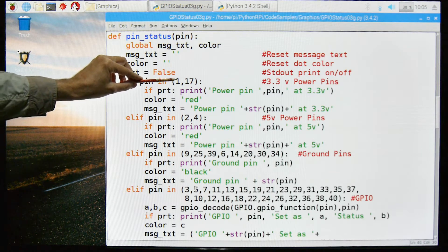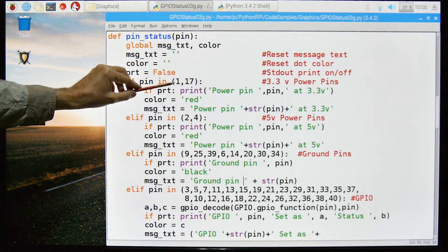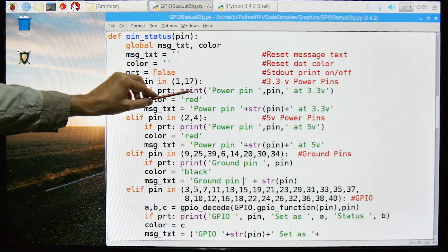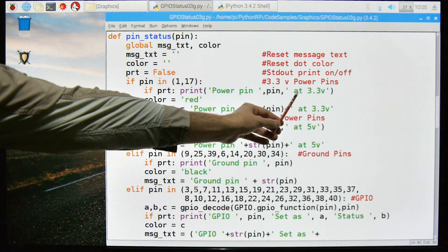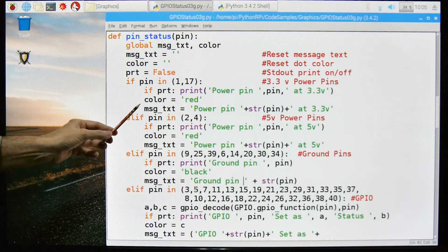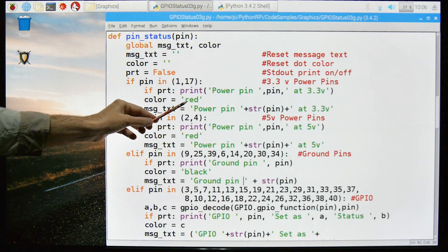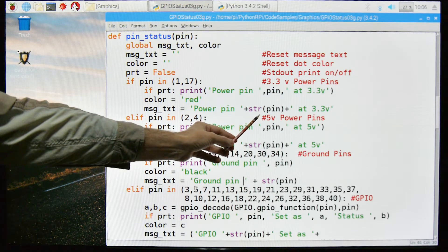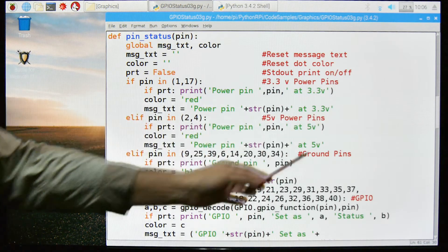If the PIN is in this range, 1 and 7, so these are the 3.3 power supply PINs, then if this were true I would print this statement, power PIN, the PIN number at 3.3 volts. I will set the color to red and then the message text, power PIN, say number 1 at 3.3 volts.